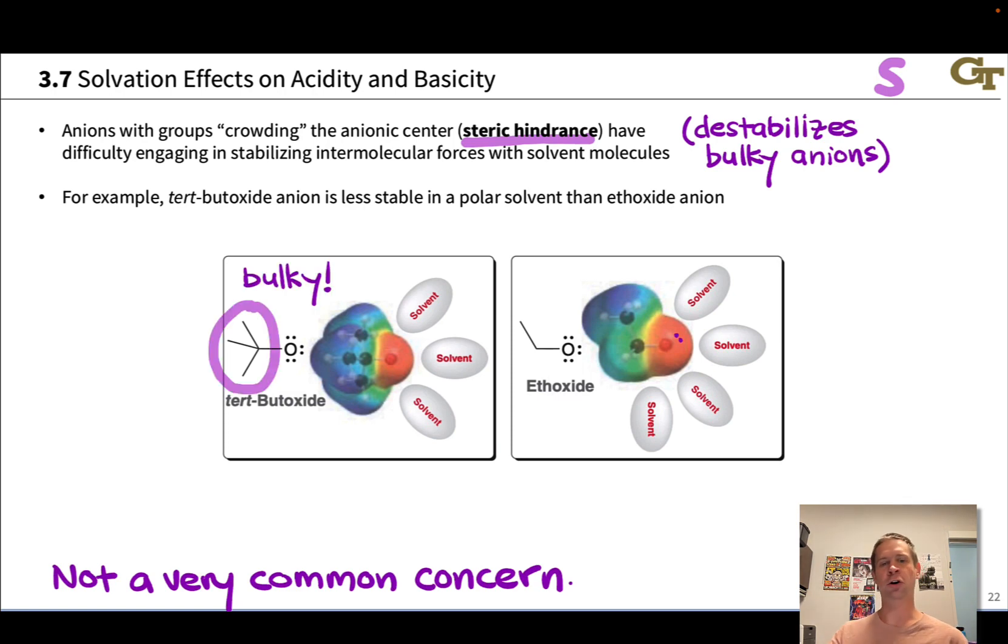So the tert-butyl group blocks solvent molecules from getting close. Relative, for example, to ethoxide, where we've replaced two of those methyls with hydrogens, there's a lot less bulkiness in ethoxide. And so more solvent molecules can get close to the negatively charged oxygen in ethoxide. And so we have more intermolecular forces with the ethoxide anion in solution and greater stability.